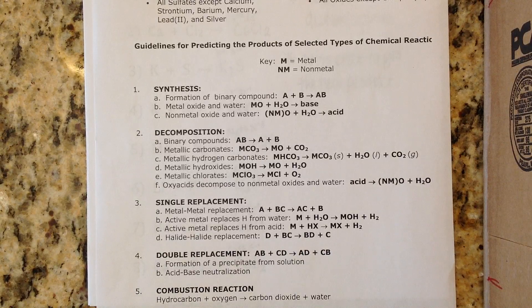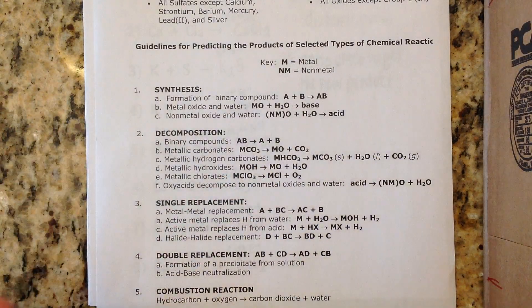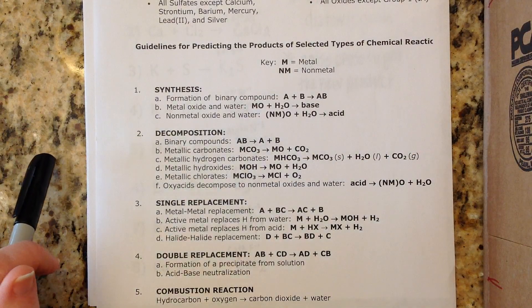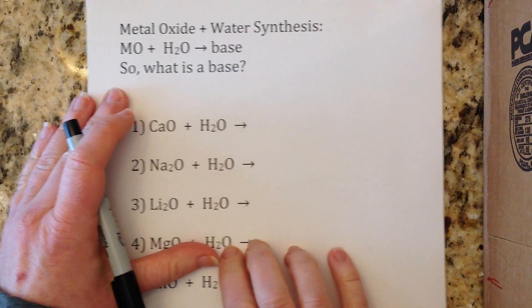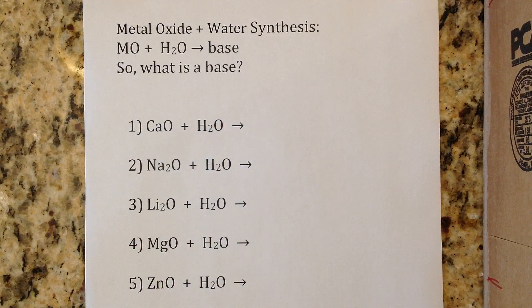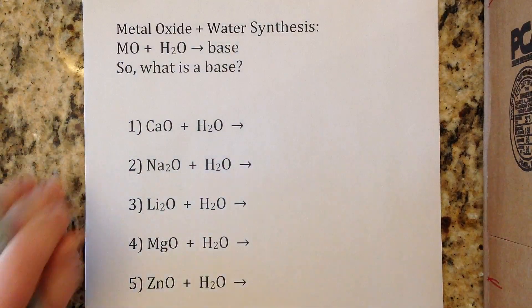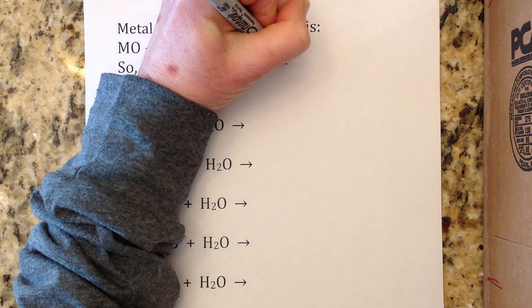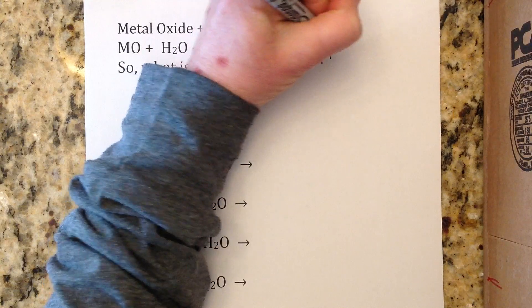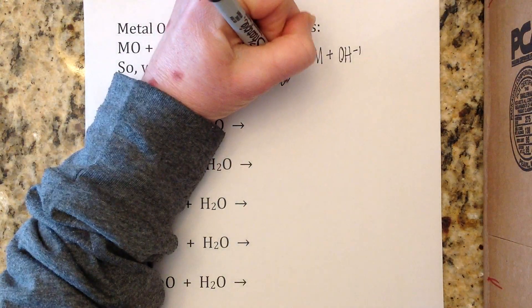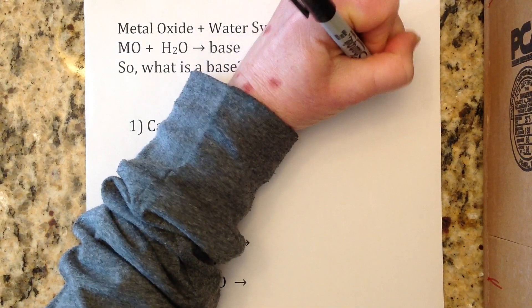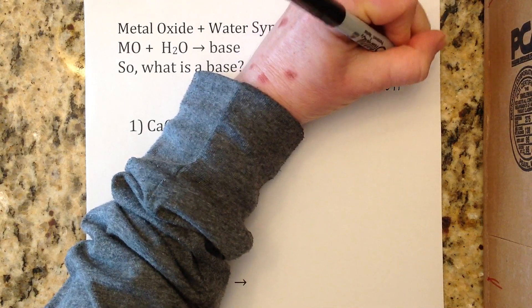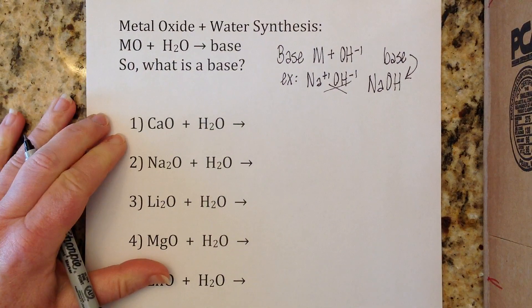In metal oxide-water combinations, we always get a base. A base is any metal that has been crisscrossed with hydroxide. The generic reaction is: metal oxide plus water yields a base. For example, if you crisscross sodium Na⁺¹ with hydroxide OH⁻¹, you get sodium hydroxide — and that is a base. Commit that to memory: a base is a metal crisscrossed with hydroxide, and the product of a metal oxide-water reaction is always a base.